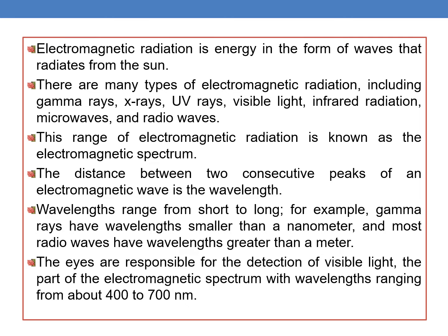This range of electromagnetic radiation is also known as the electromagnetic spectrum. The distance between two consecutive peaks of an electromagnetic wave is the wavelength. The wavelength ranges from short to long. For example, gamma rays have wavelengths smaller than nanometers, and most radio waves have wavelengths greater than a meter.